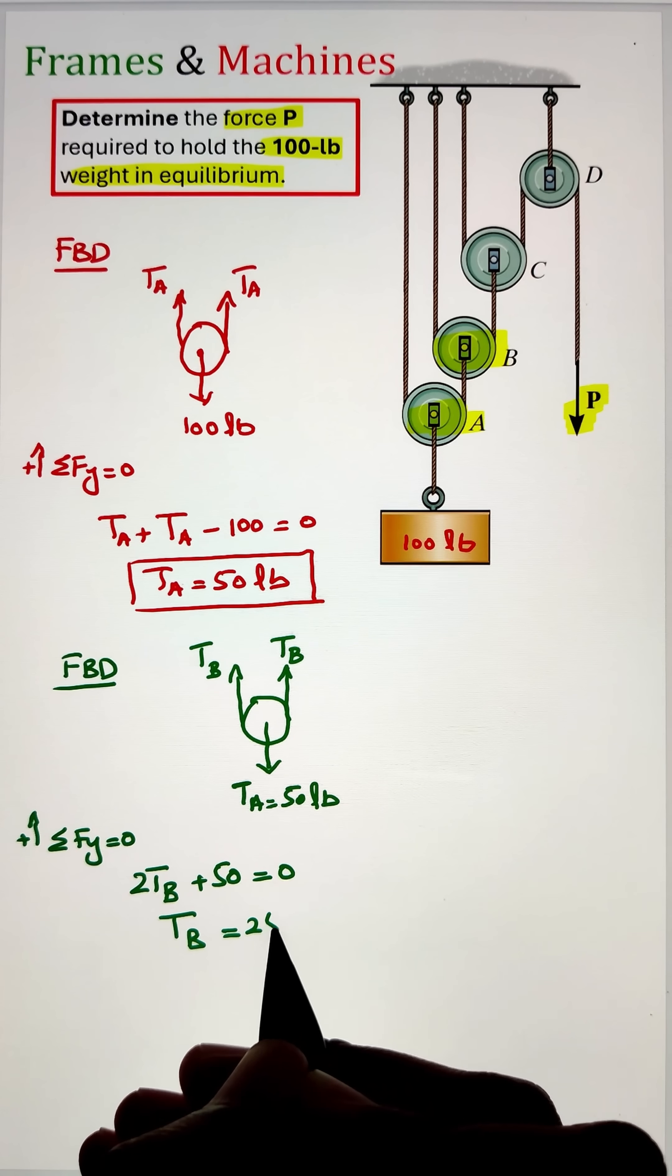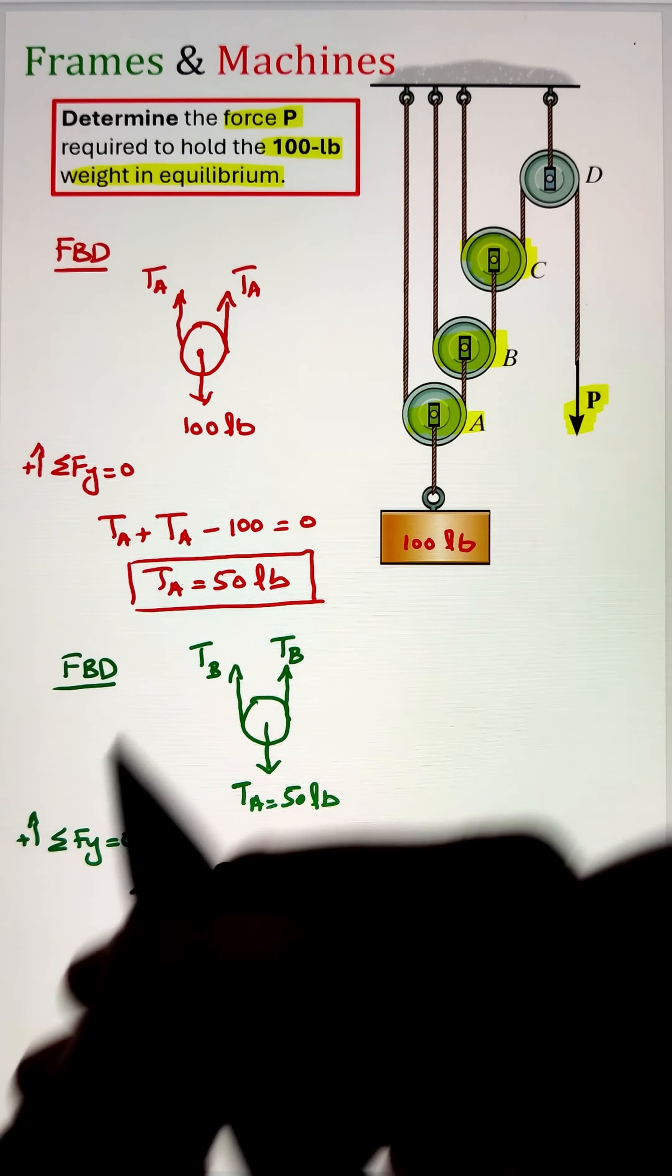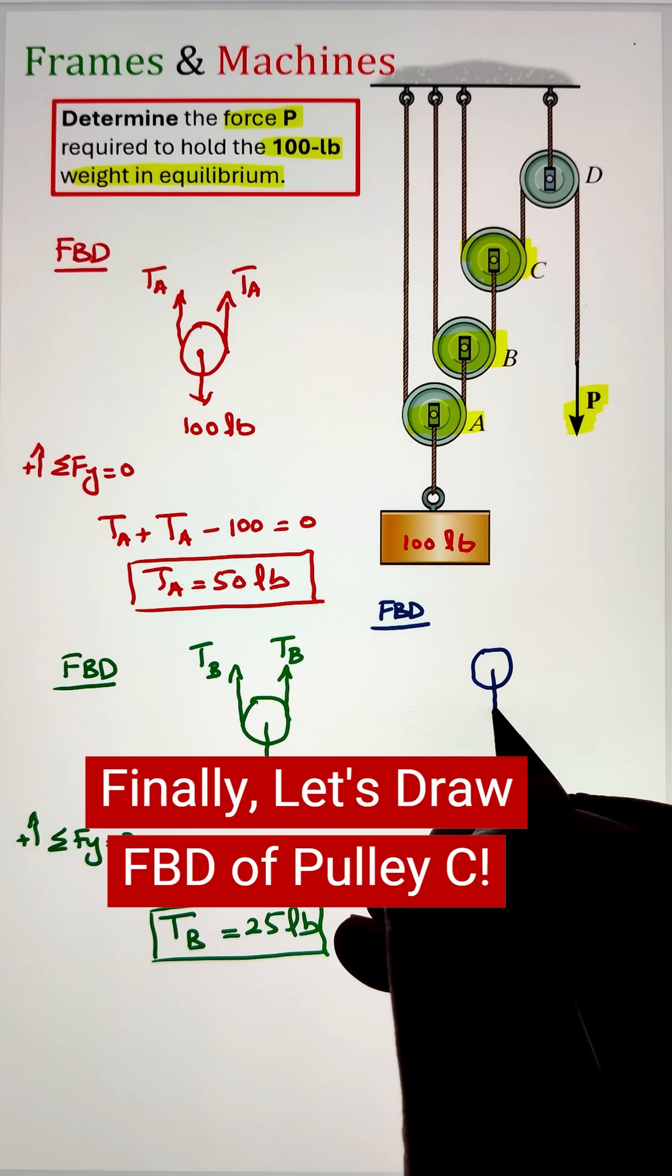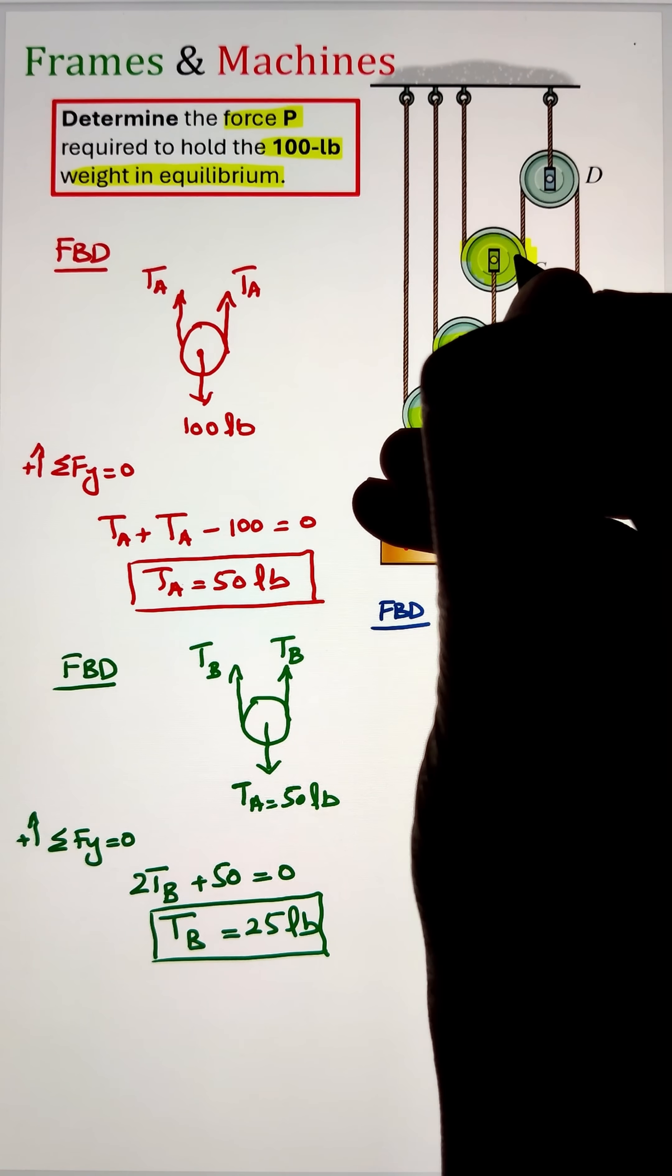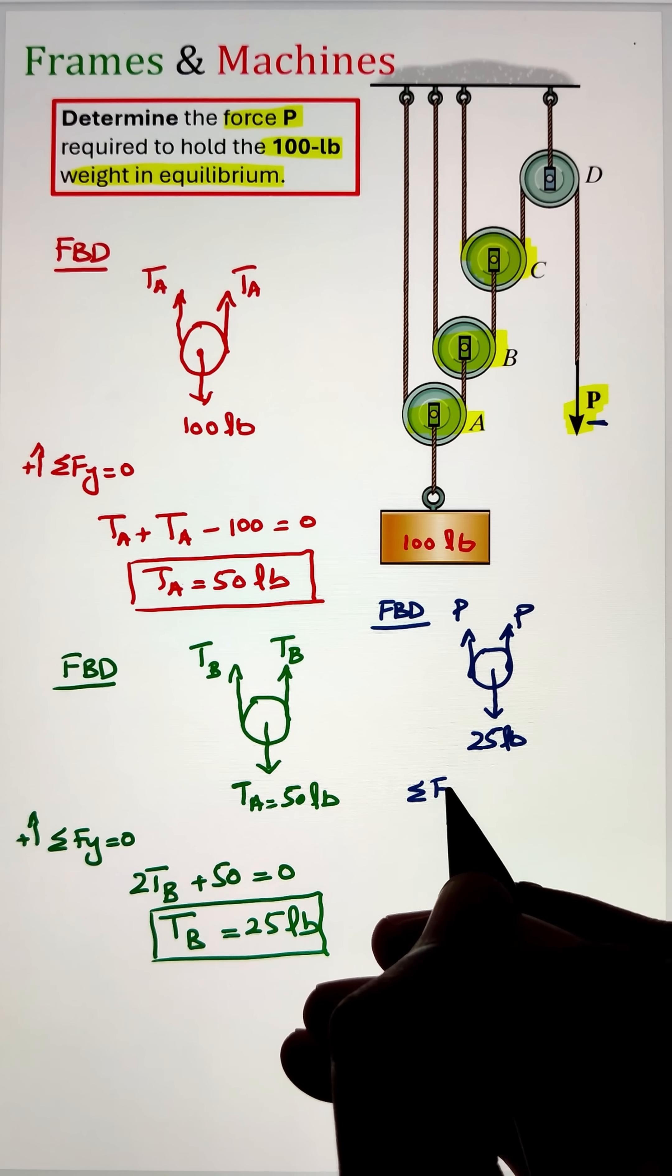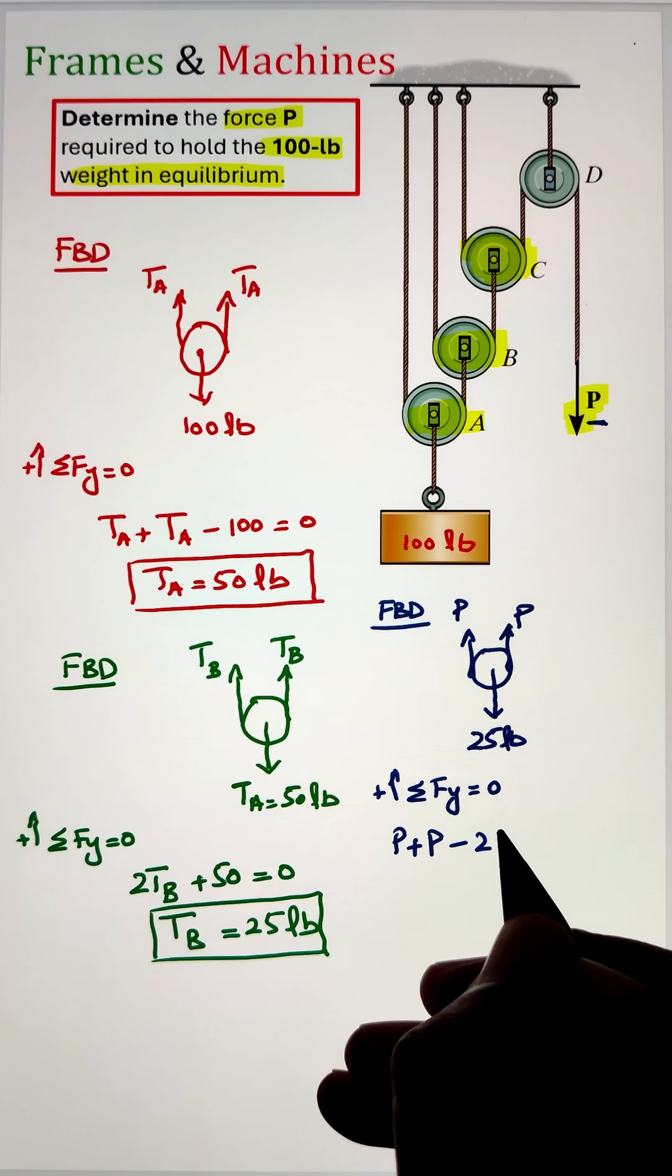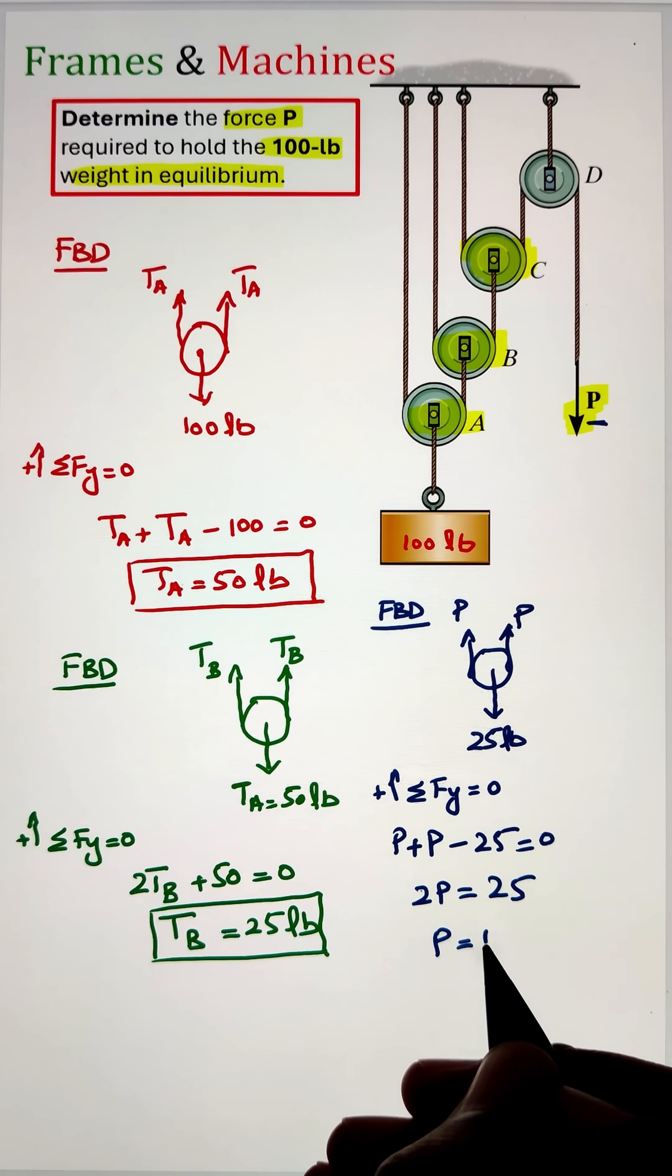Finally, let's draw the free body diagram of pulley C. The rope connecting pulley C and pulley B is in tension of 25 pounds, whereas the rope extending from pulley C towards pulley D is the same rope, so the tension will be constant throughout. That's why I have two forces P going in the upward direction, going away from pulley C. Applying the equilibrium condition and simplifying, we get P as 12.5 pounds.